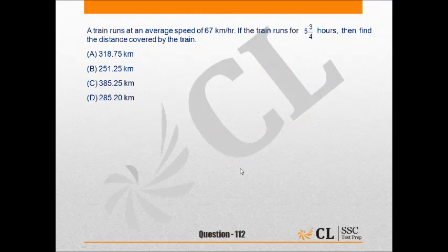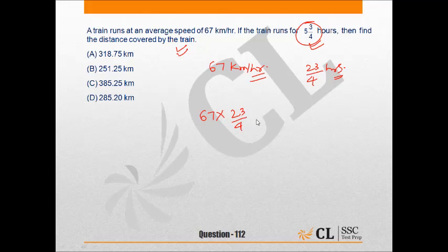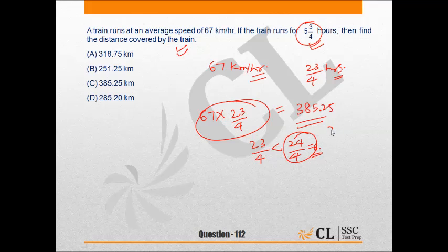And option B is our answer. In the next question, a train runs at an average speed of 67 km per hour. If the train runs for 5¾ hours, that is equal to 23/4 hours, and the distance covered by the train is asked. So speed into time, that is 23/4, and this would be equal to 385.25 because 23/4 is slightly less than 24/4, and 24/4 is equal to 6. So 67 × 6 equals 402. It is sure that our answer would be less than 402 and slightly lesser, so option would be C.